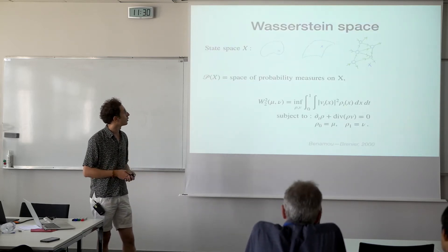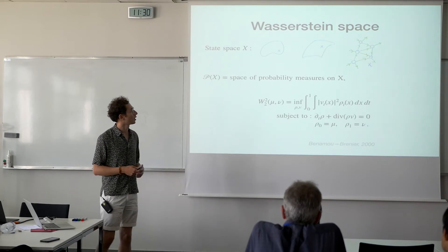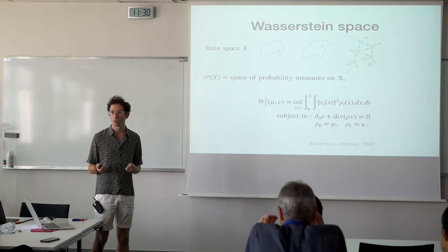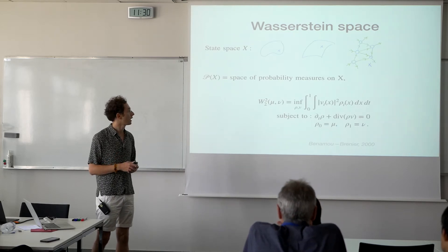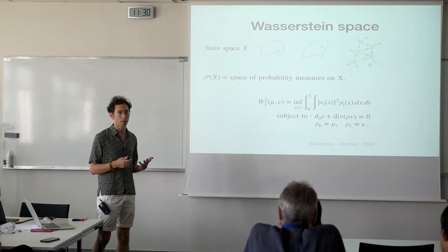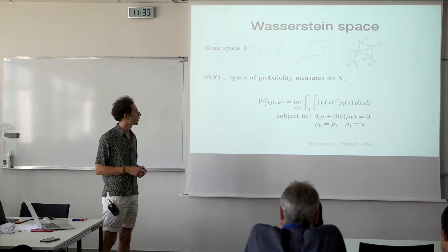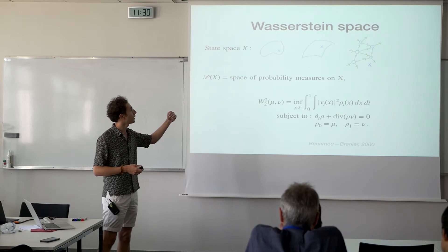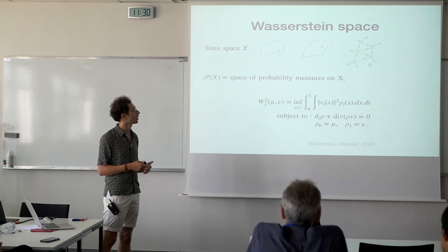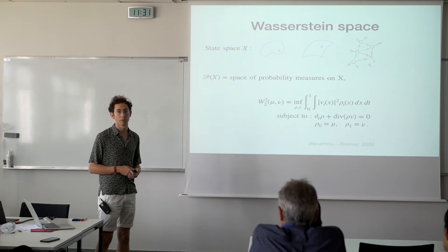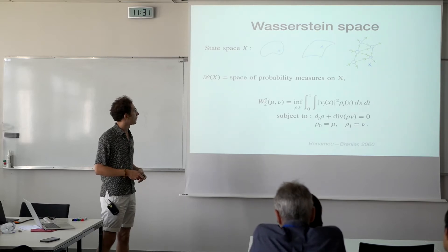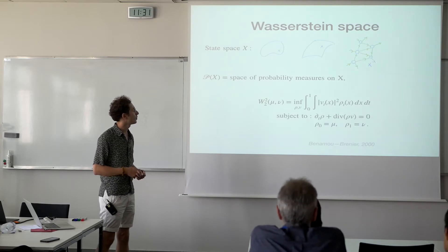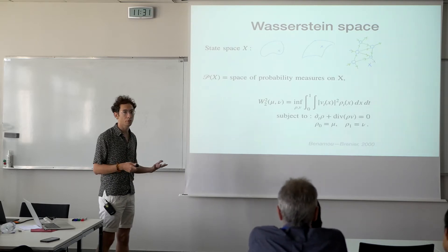We start by choosing a state space X, which for simplicity I will often take to be the Euclidean space R^d. But in many cases, things work as well if you take a domain of Euclidean space, a manifold, or even in some cases discrete structures such as graphs. To fix the notation, P(X) is the space of probability measures, and to this space I add the Wasserstein metric.